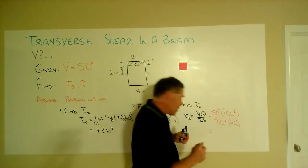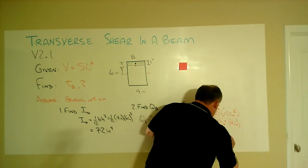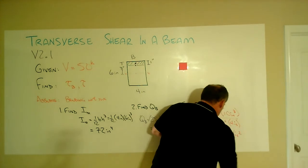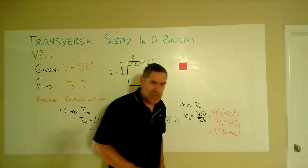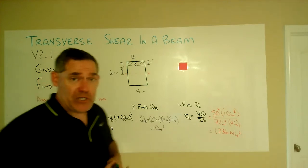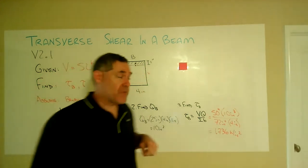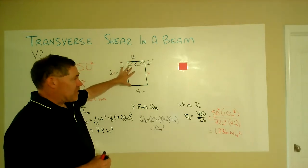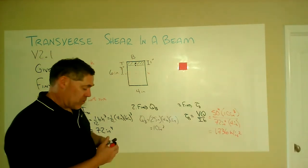a stress of 1.736 kips per square inch, which is about 1.7 ksi. All right, so that's the shear stress at point B, one of the things we're asked to find.